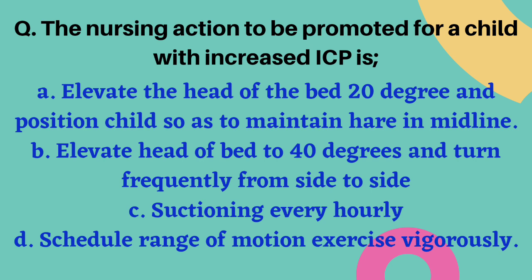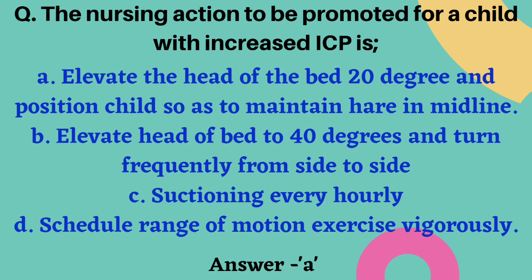The nursing action to promote for a child with increased ICP: options are elevate head of bed 20 degrees and position child in midline, elevate head of bed 40 degrees and turn frequently side to side, suctioning every hour, or scheduled vigorous range-of-motion exercises. The correct answer is option A — elevate head of bed 20 degrees and maintain midline position. The child must be kept in midline. Turning the patient frequently side to side is incorrect and was rejected.